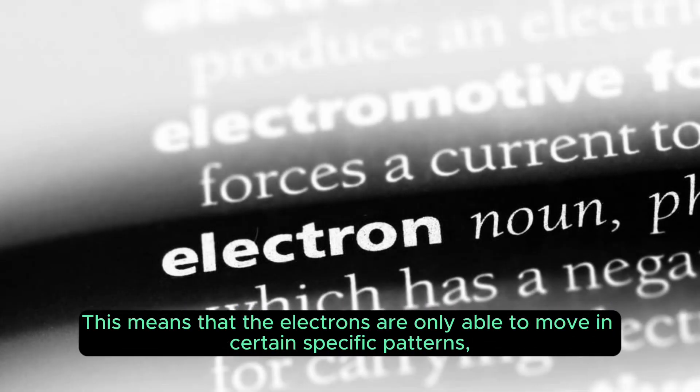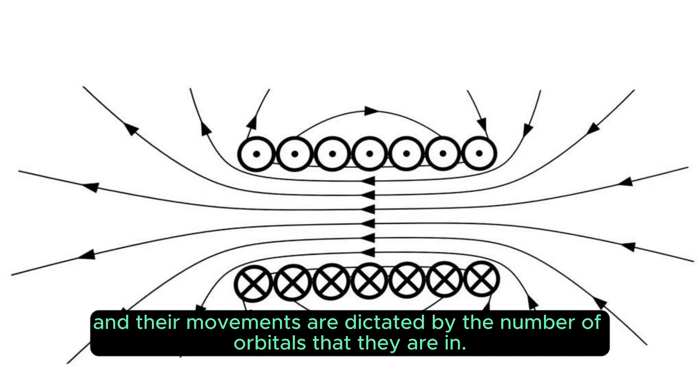This means that the electrons are only able to move in certain specific patterns, and their movements are dictated by the number of orbitals that they are in.